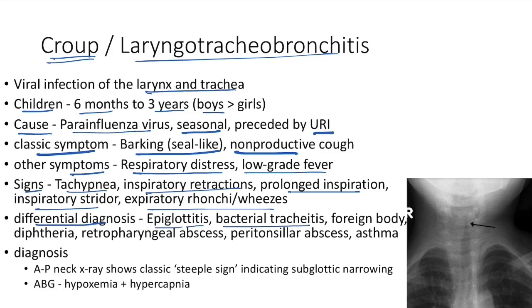Differential diagnosis of croup: rule out epiglottitis, bacterial tracheitis, foreign body, diphtheria, retropharyngeal abscess, peritonsillar abscess, and asthma. Diagnosis: AP neck X-ray shows the classic steeple sign indicating subglottic narrowing. Arterial blood gas analysis may reveal hypoxemia and hypercapnia.